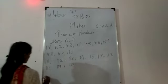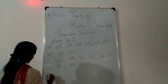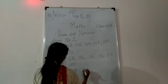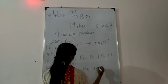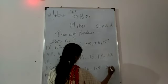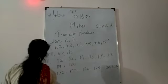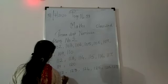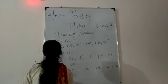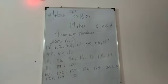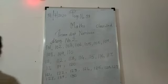Next is 121, 122, 123, 124, 125, 126, 127, 128, 129, and 130. In this way you are supposed to complete the table. I have written it up to 130.